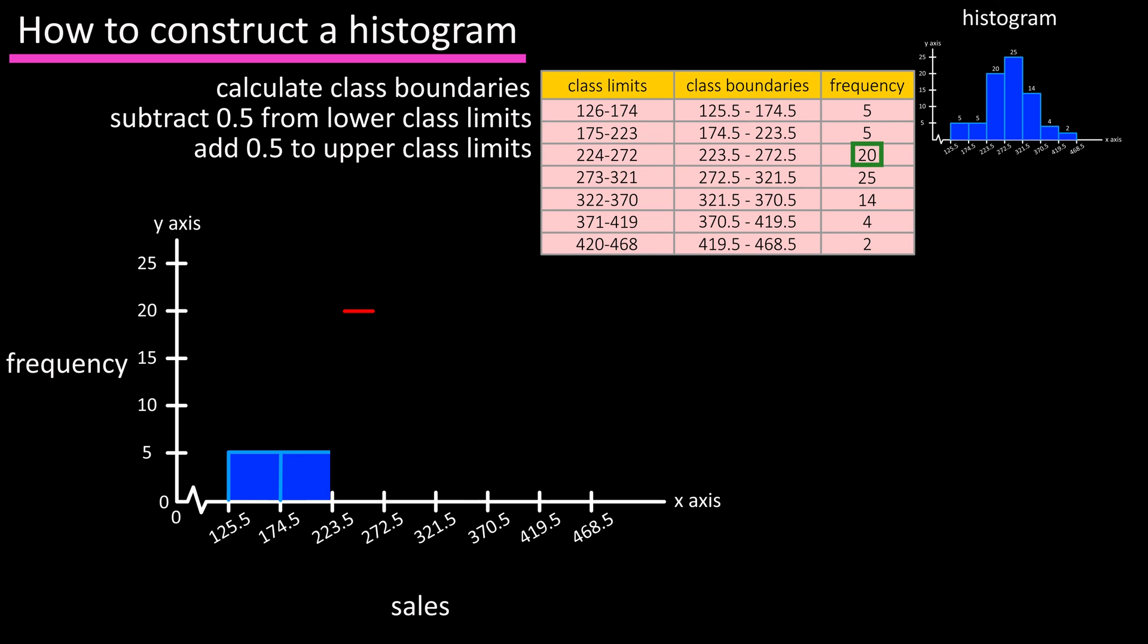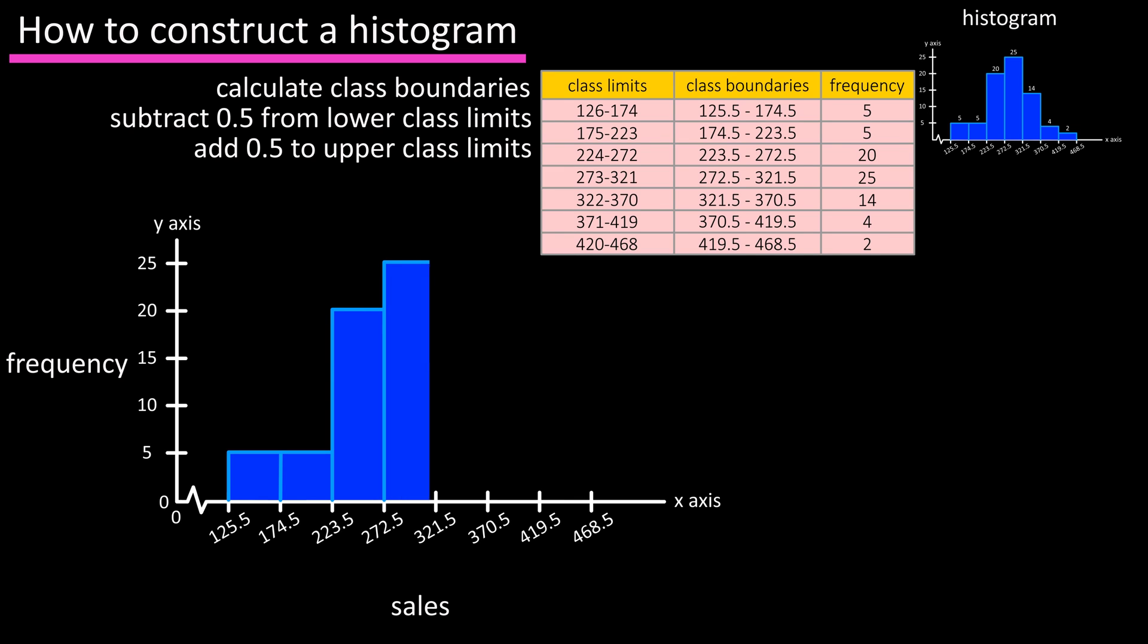For class 3, the frequency is 20, so again mark it, draw in the lines, and fill in the bar. And continue this for the remaining classes, 25, 14, 4, and then 2.